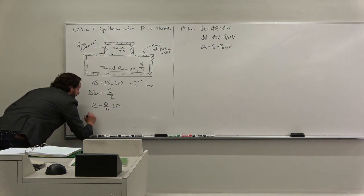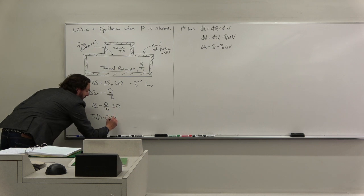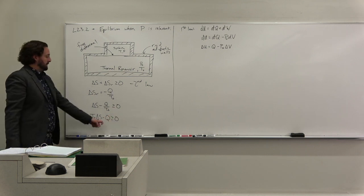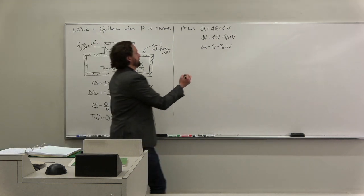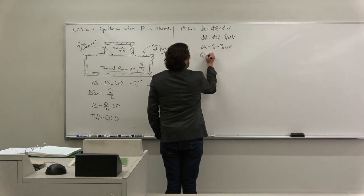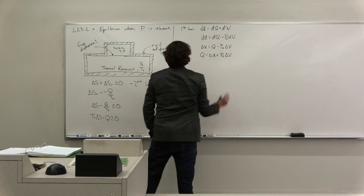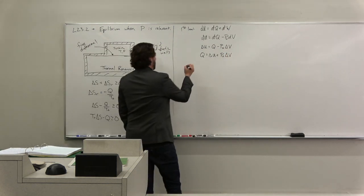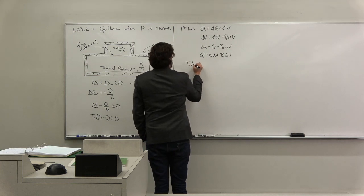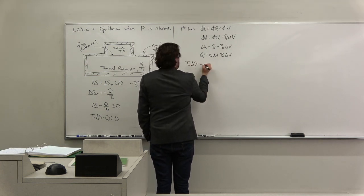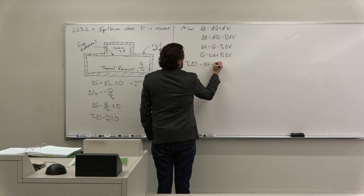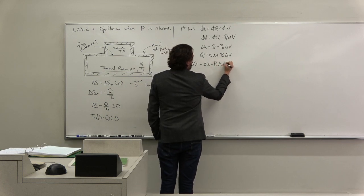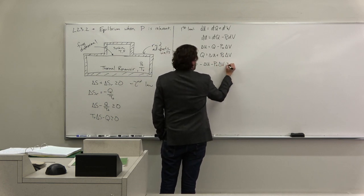So I should have taken this one and written T0 delta S minus Q is greater than or equal to zero. So what we're going to do is be able to take our Q from here, this is delta U plus p0 delta V, and combine it with this one, so we get T0 delta S minus delta U minus p0 delta V is greater than or equal to zero.